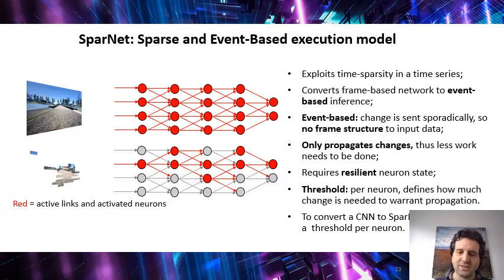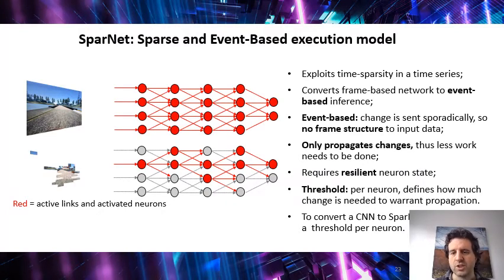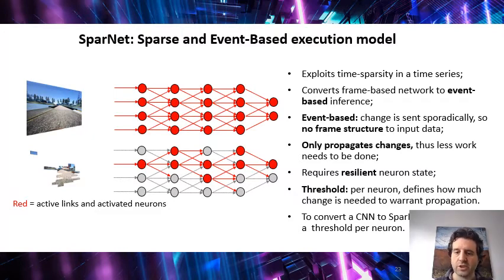So the essential part of the conversion of a normal CNN to our SparNet is just providing this threshold. And by the way, that's also the way that neuromorphic computing works. If you look at those spiking neural network neurons I showed you, exactly for each one of them you define a threshold above which they spike by accumulation of the input.